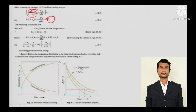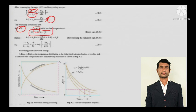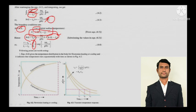Applying boundary conditions: at τ = 0, T = Ti (initial temperature). Substituting gives the constant C = ln(Ti - Ta). So the expression becomes ln(T - Ta) = -(hA/ρVC)·τ + ln(Ti - Ta). Combining the logarithmic terms gives the temperature profile: (T - Ta)/(Ti - Ta) = exp[-(hA/ρVC)·τ]. This is the temperature distribution for Newtonian heating or cooling.